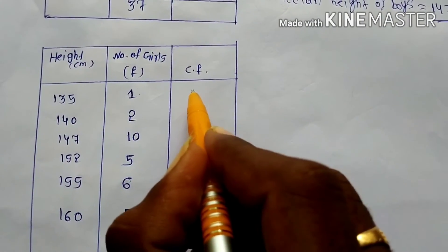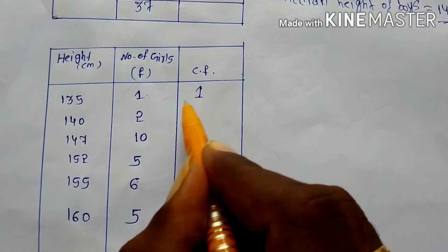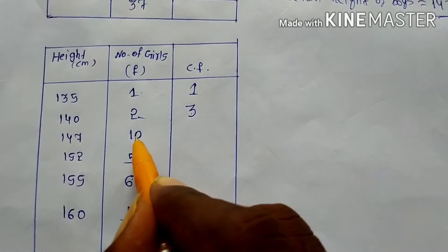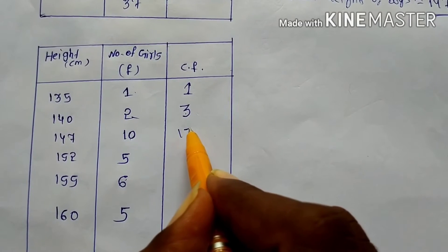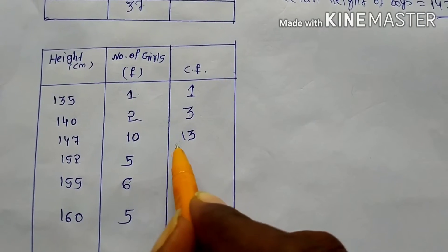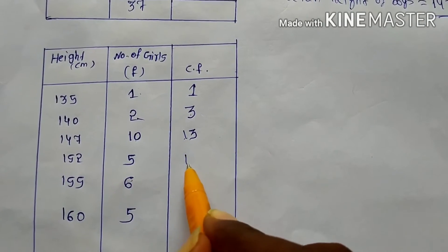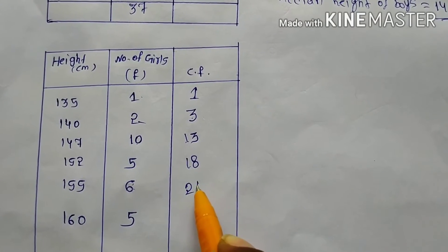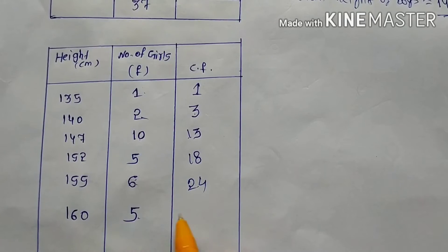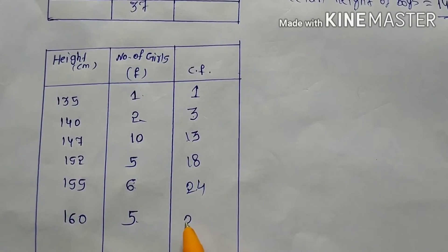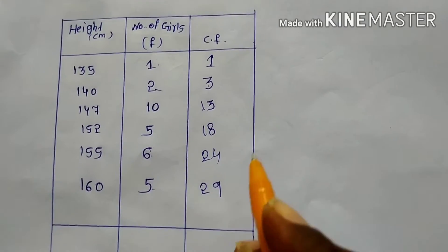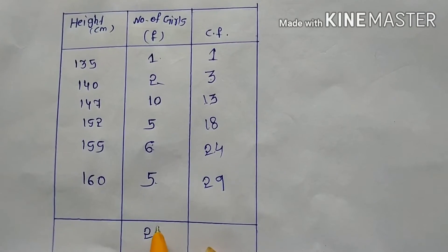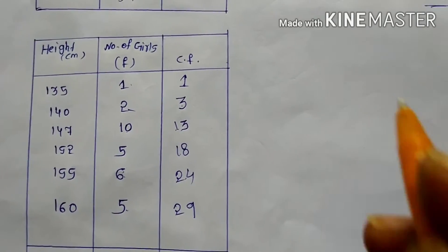In the same way, we find the girls' median height. The cumulative frequencies for girls are: 1, then 1 plus 2 gives 3, then 3 plus 10 gives 13, then 13 plus 5 gives 18, then 18 plus 6 gives 24, and 24 plus 5 gives 29. The total frequency for girls is 29.